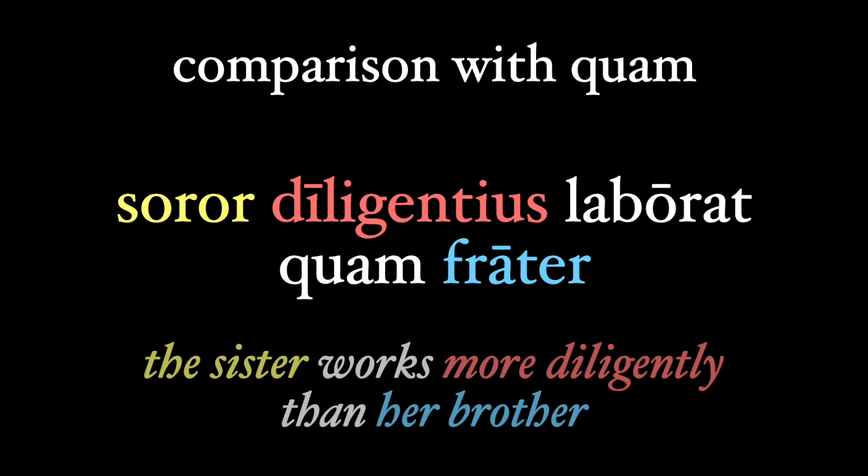Also, quam is used pretty regularly with comparative adverbs, as in 'the sister works more diligently than her brother': soror diligentius laborat quam frater. Diligentius is our comparative adverb, so we expect to use quam here, comparing how the sister works to how her brother works. But of course, poets break all the rules.